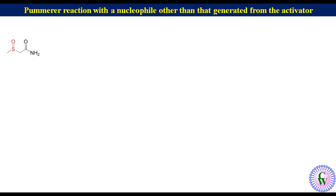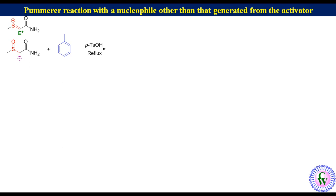The first example is the reaction of 2-methylsulfenyl acetamide with toluene in the presence of para-toluenesulfonic acid under reflux, where toluene also acts as a solvent. 2-methylsulfenyl acetamide reacts with para-toluenesulfonic acid to produce electrophile E+, mainly due to the higher acidic nature of the active methylene hydrogen. Since the methyl group in toluene is ortho-para directing and the para position is more reactive due to less steric hindrance, the reaction occurs at the para position to produce compound A as the major product with 49% isolated yield.